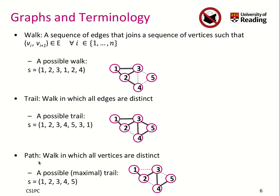Lastly, we have a path. A path is a walk in which all the vertices are distinct. So I can go from vertex 1, to 2, to 3, to 4, to 5. But I cannot go back now from 5 to 3, because that vertex I already walked through. So this is now a maximal trail, meaning I have passed all the possible vertices.